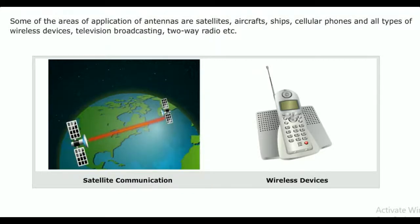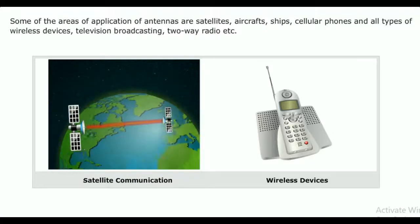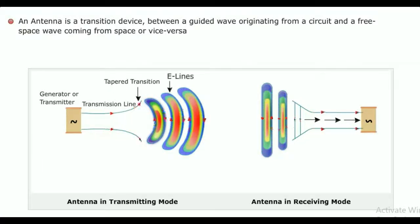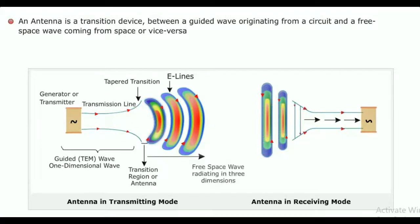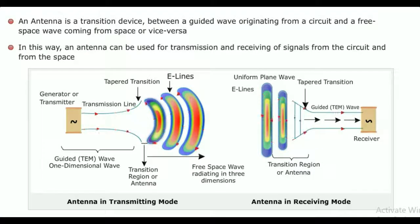Television broadcasting, AM/FM radio, etc. An antenna is a transition device between a guided wave originating from a circuit and a free space wave coming from space or vice versa. In this way, an antenna can be used for transmission and receiving of signals from the circuit and from space.